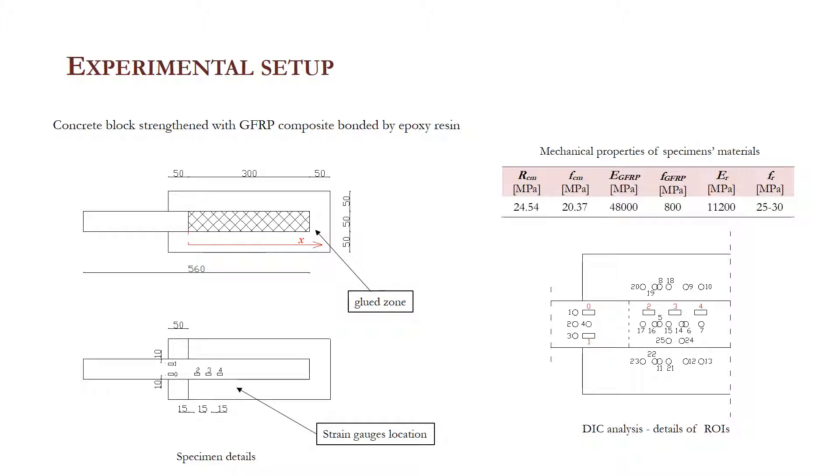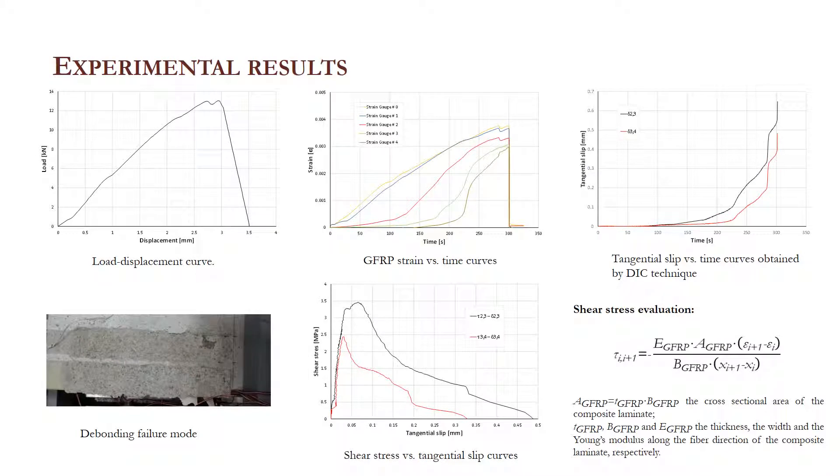The digital image correlation analysis was performed by considering 25 small subregions of interest. The NCorr algorithm, enhanced via an in-house made MATLAB routine, was used for DIC analysis. The results of the preliminary tests are shown and discussed in detail.